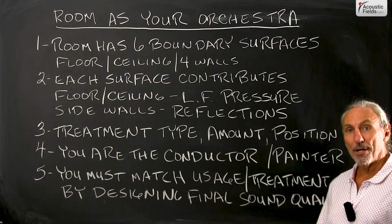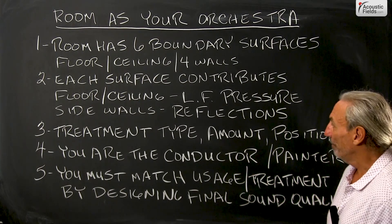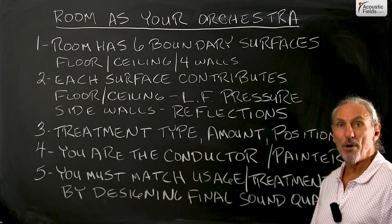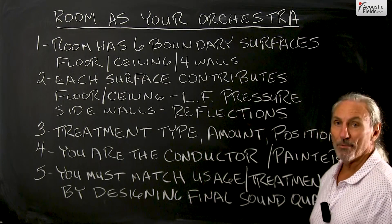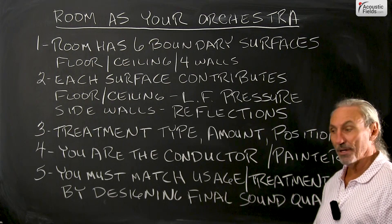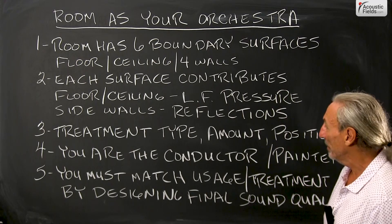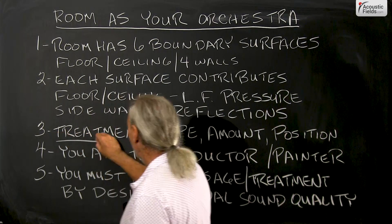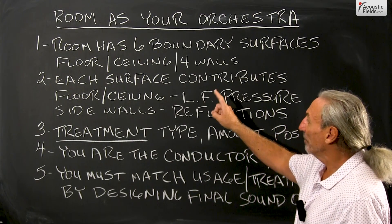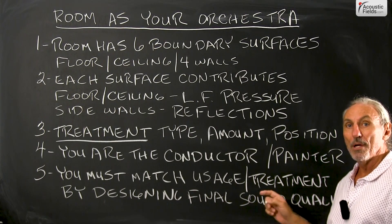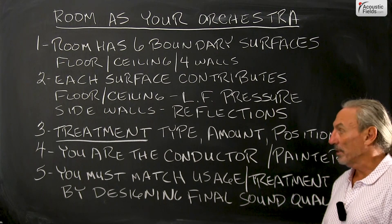The only way to handle that is to have the right horsepower in the treatment and cover enough surface area. The floor to ceiling is usually the smallest of the three dimensions, so you have to account for that. Side walls are big reflection-producing devices, constantly orchestrating reflections back at the listening and monitoring position. But we have control — we're the conductor. We have control of the treatment, the size of the room we build, the volume of the room, and control of the usage.